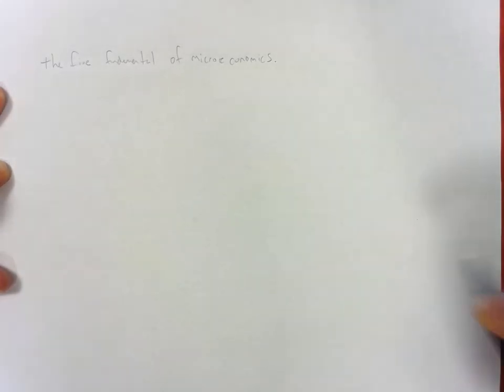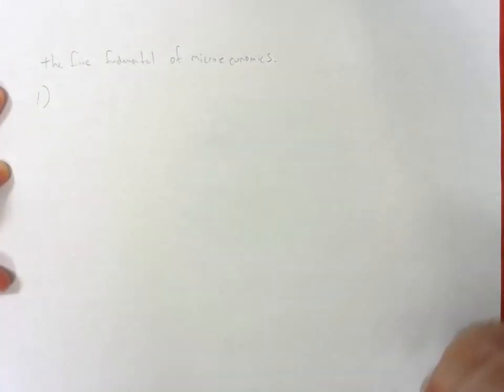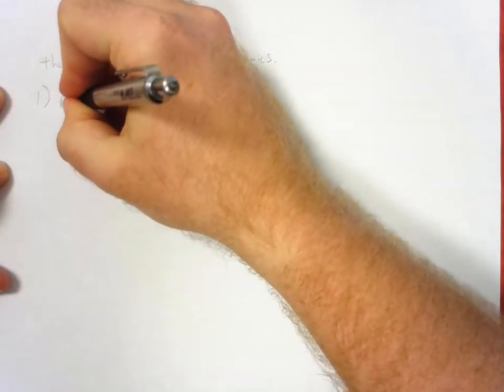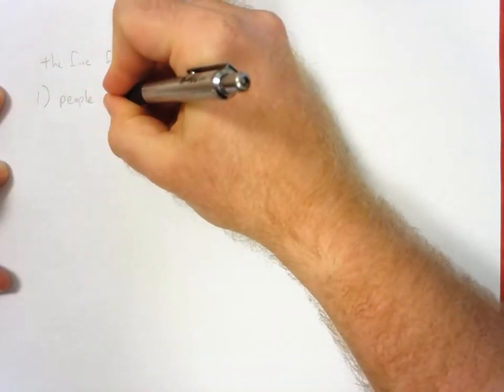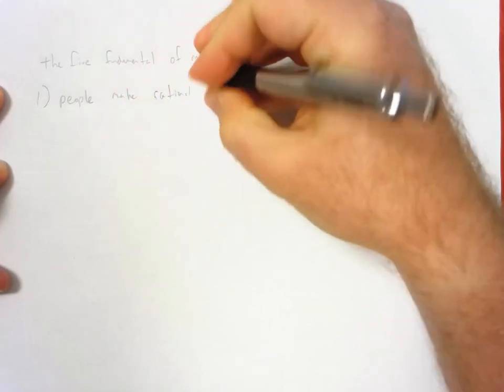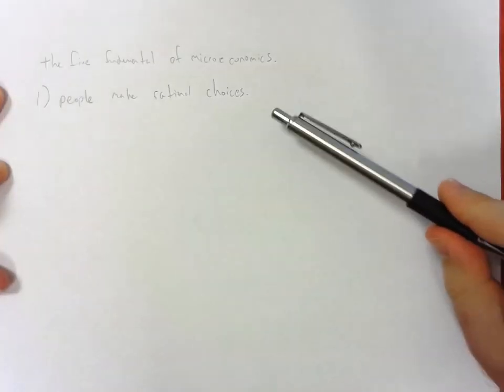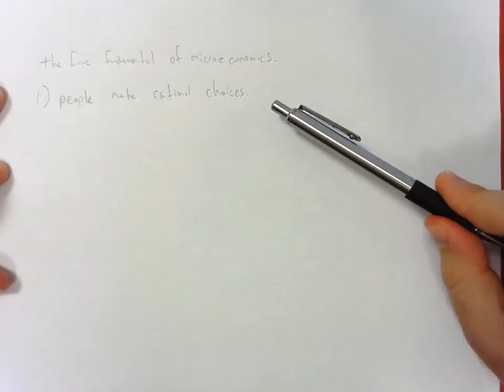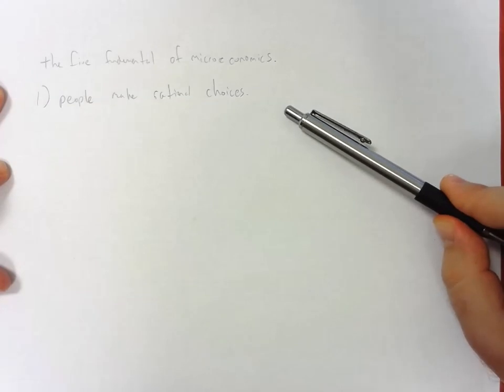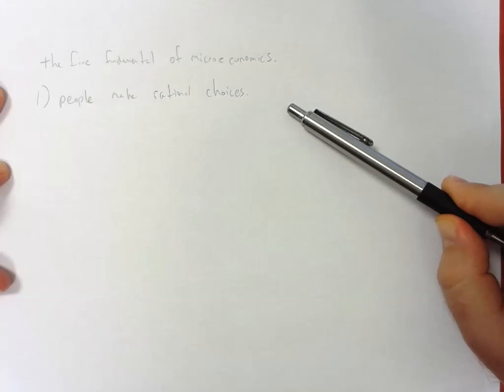So first, probably something that a lot of psychology students have a problem with, but it's economics. We've got to move forward. We've got to assume it. People make rational choices. So, a lot of people look at this and they say, okay, does this mean that people are smart? No. It just means that they make the best available decision they can make given the information that they have accessible to them.